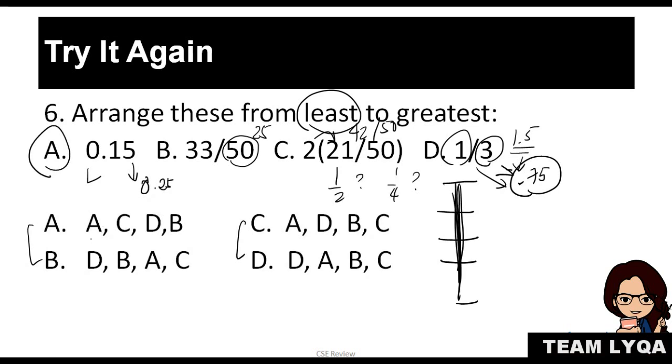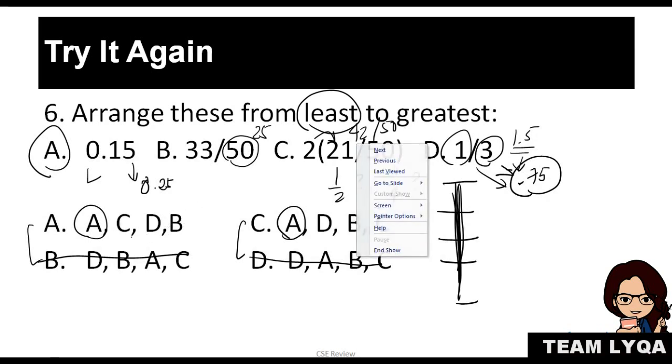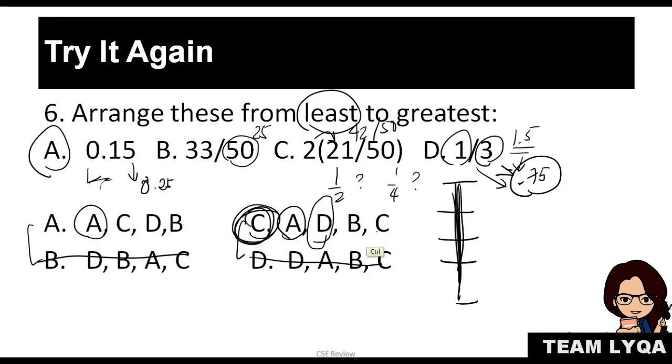Let's go back to our options. B can't be the answer anymore. D can't be the answer anymore. Because we know it should start with A, since it's least to greatest. The next question would be this. If you're in a hurry, you can just guess which of the two is the answer. Or better yet, look at what's at the end or what comes next. We saw earlier that 0.15 is lower than 1 over 3. But definitely, this is lower than half. So that means the next one has to be letter D. And since it's just this one, the answer would be letter C right away.